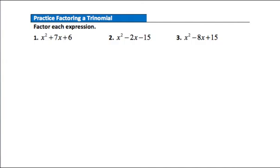Now it's time to check your understanding — pause the video and answer the practice questions, then hit play to see how you did. Practice Question 1: it's a trinomial with no greatest common factor, so we factor into two binomials. Everything is addition, so both signs are positive. Firsts give x and x. Factors of 6 are 6 and 1, and 2 and 3. We want a middle term of 7, so we choose 6 and 1: they multiply to give 6 and add to give 7.